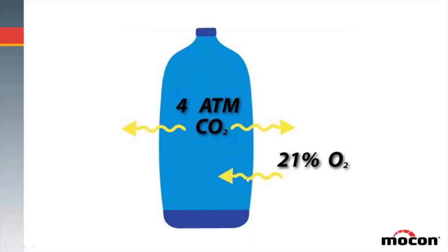Likewise, when you fill a bottle like this, you've got room air around it. That room air oxygen still wants to permeate in and come to equilibrium. Even though I have a highly pressurized system, oxygen is at a low concentration inside the bottle, so it will still want to move in. This is a great example of how permeation really is a two-way street. The ultimate goal is to come to equilibrium — to be at a very level concentration on both sides of a packaging material.